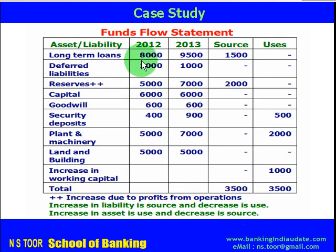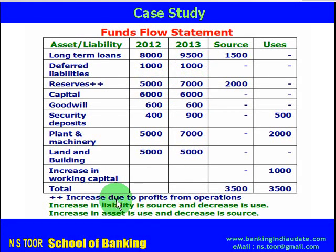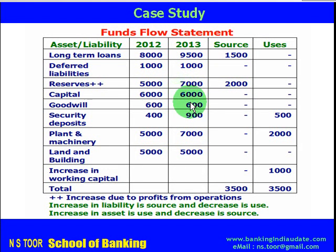Long-term loan increased from 8,000 to 9,500, that is an increase of 1,500. Increase in liability is a source, so we place it under sources. There is no change in capital or goodwill. There is a change in security deposit — this is an asset that increased by 500. Increase in asset is a use, so we place it under uses. Increase in reserves of 2,000 represents profit from operations, and since it is an increase in liability, it is placed under sources.